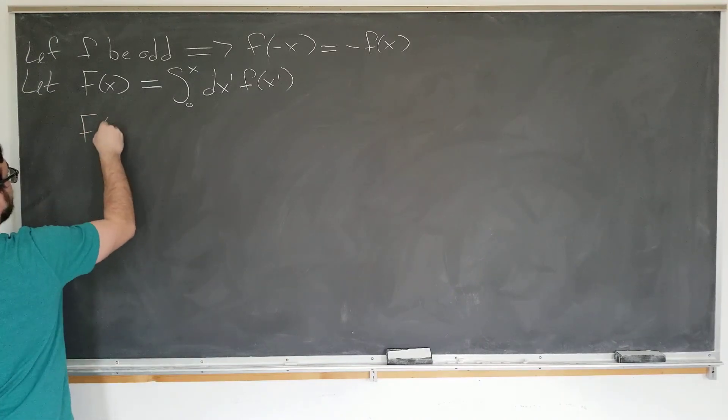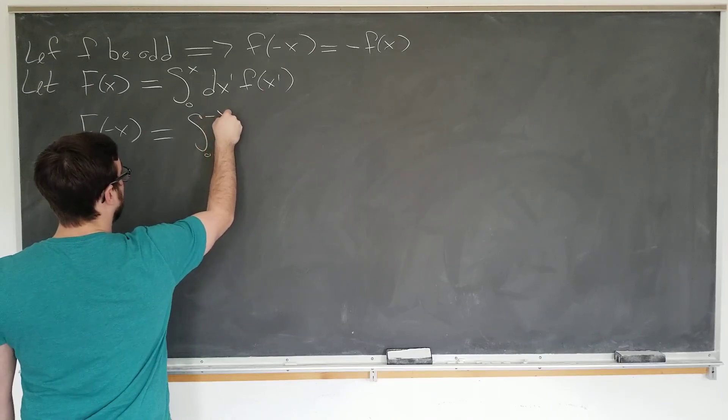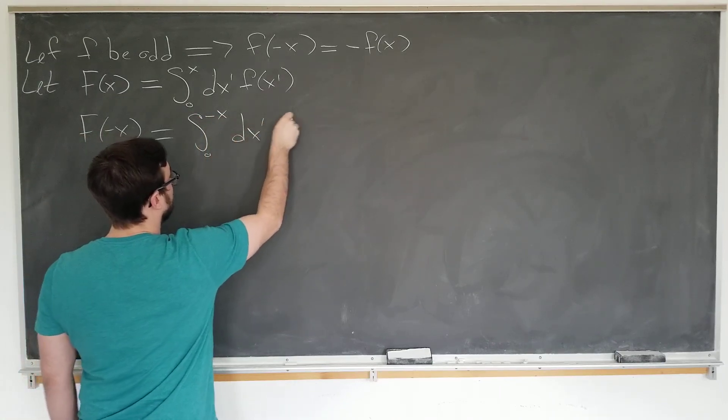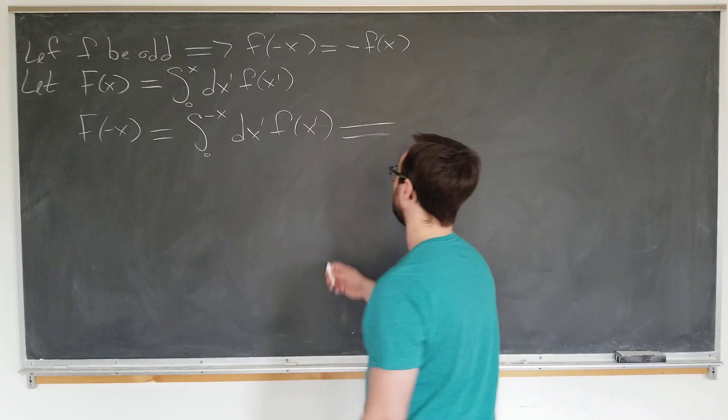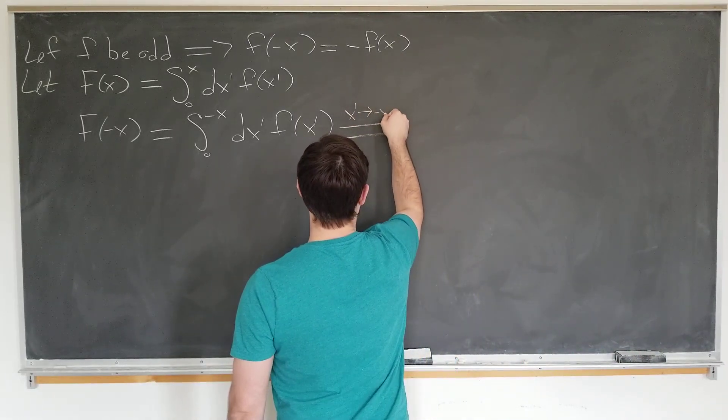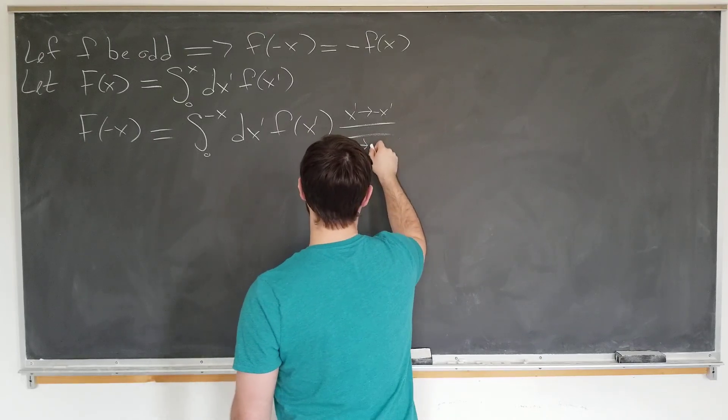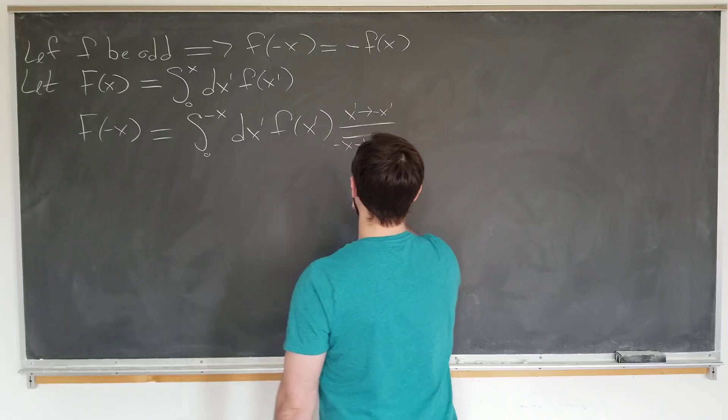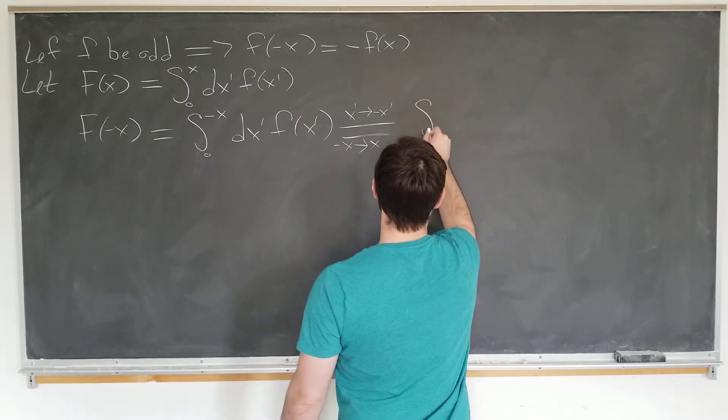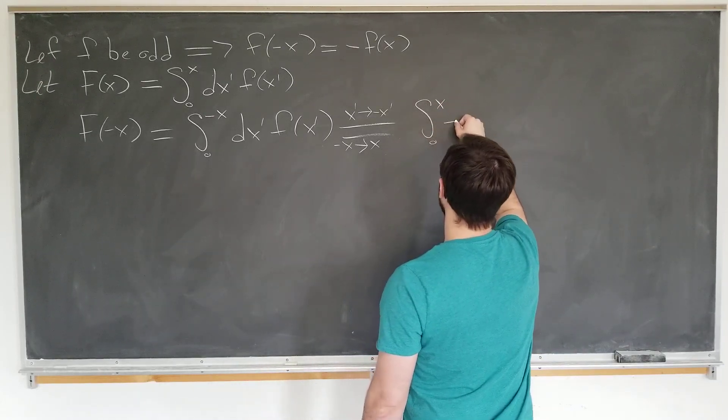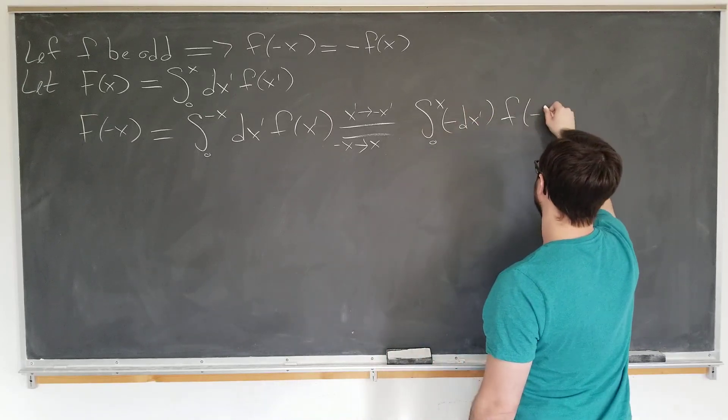Okay, so then F of minus x is now equal to the integral from zero to minus x dx prime of f of x prime. And now we just do a change of variables in the integral. We're going to let x prime go to minus x prime. And this, of course, tells us that minus x goes to x. And the dx prime is similarly transformed. So the integral becomes, if we go from zero to x, we have a minus dx prime here. Then we have f of minus x prime.